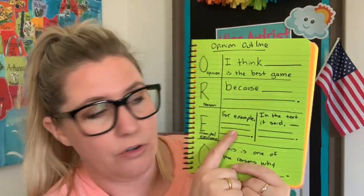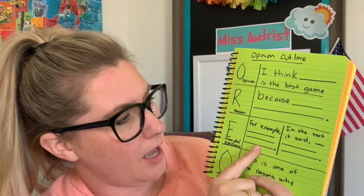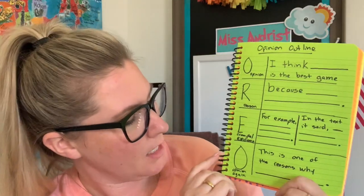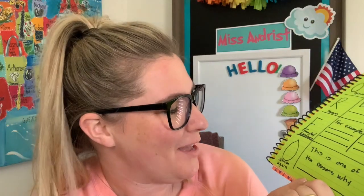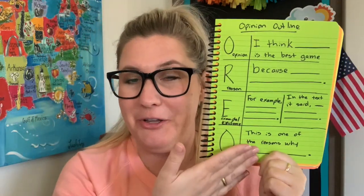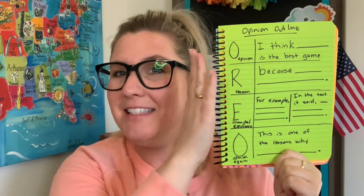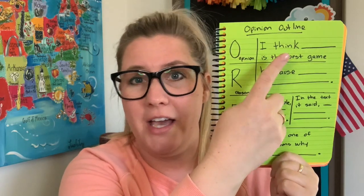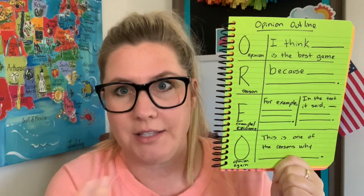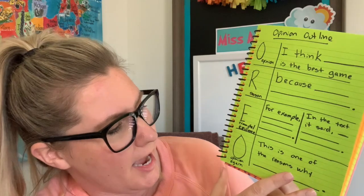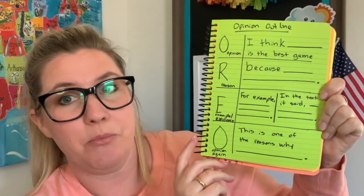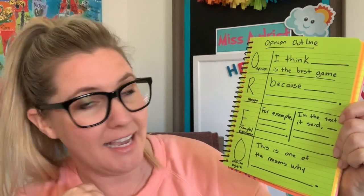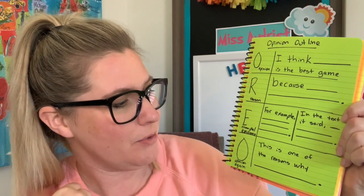I wrote two sentence frames here. If you're using an example, you might say 'For example, blank.' If you're doing text evidence, you might use: 'In the text it said, blank.' Then finally at the end of your paragraph you state your opinion again. Your concluding sentence sounds a lot like your topic sentence, just said in different words — basically saying the same thing. So if you said the game is the best at the beginning, at the end you say, 'And that's why this game is the best.' Your sentence frame could be: 'This is one of the reasons why blank.' So altogether: 'I think blank is the best game because blank. In the text it said blank. This is one of the reasons why blank.'